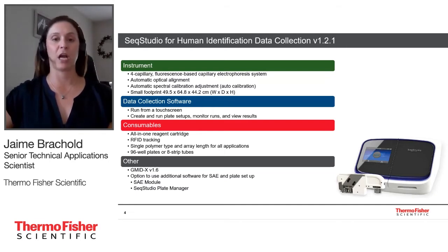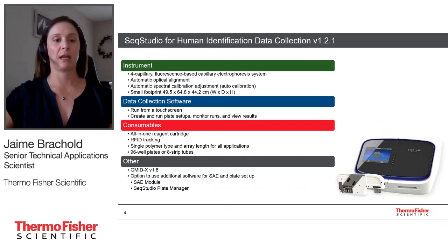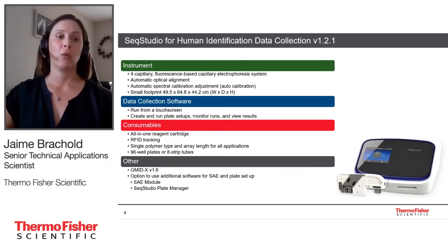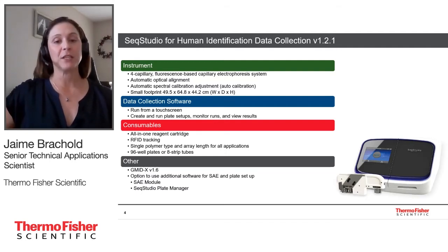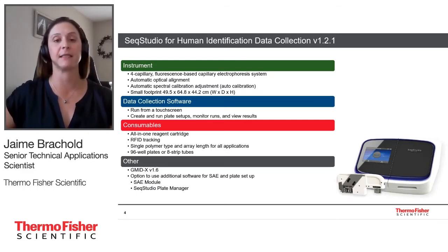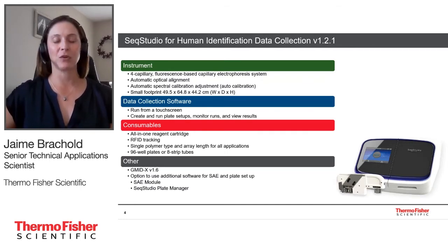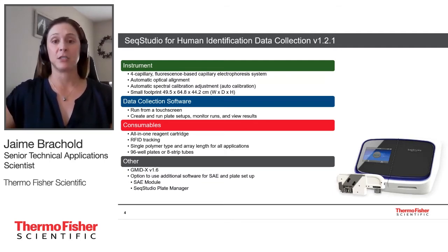There is also some optional adjunct software — an SAE module to set up different users and permissions, and a SEEK Studio plate manager to help set up plate maps that can be imported into the instrument. The SEEK Studio uses a single polymer type: POP1, used for sequencing, general fragment analysis, and STR fragment analysis, so you don't have to worry about changing polymer when running different applications. It is a 28-centimeter capillary array.